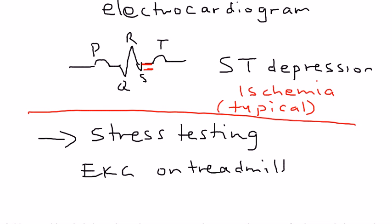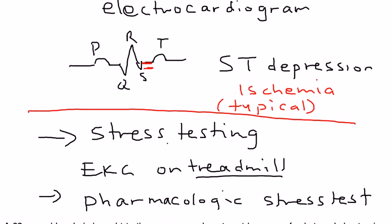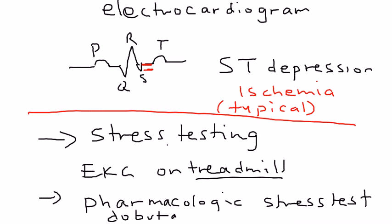What if the person is unable to get on a treadmill and walk or run — for example, an elderly patient? You can still do a stress test, but it's known as a pharmacologic stress test. Instead of exercising on the treadmill to stress the heart, the patient is given a medication. The two most commonly used medications are dobutamine and persantine. These are the two most common drugs given to stress the heart for people who cannot walk or run on a treadmill.